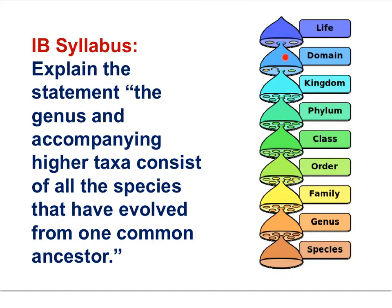Pulling out the eukaryotic domain, there are four kingdoms. From the animal kingdom comes the phylum Chordata. From Chordata comes the class of mammals, and from mammals comes the order Primates. From Primates comes the family Hominidae, from Hominidae comes the genus Homo, and from the genus Homo comes the species known as Homo sapiens.